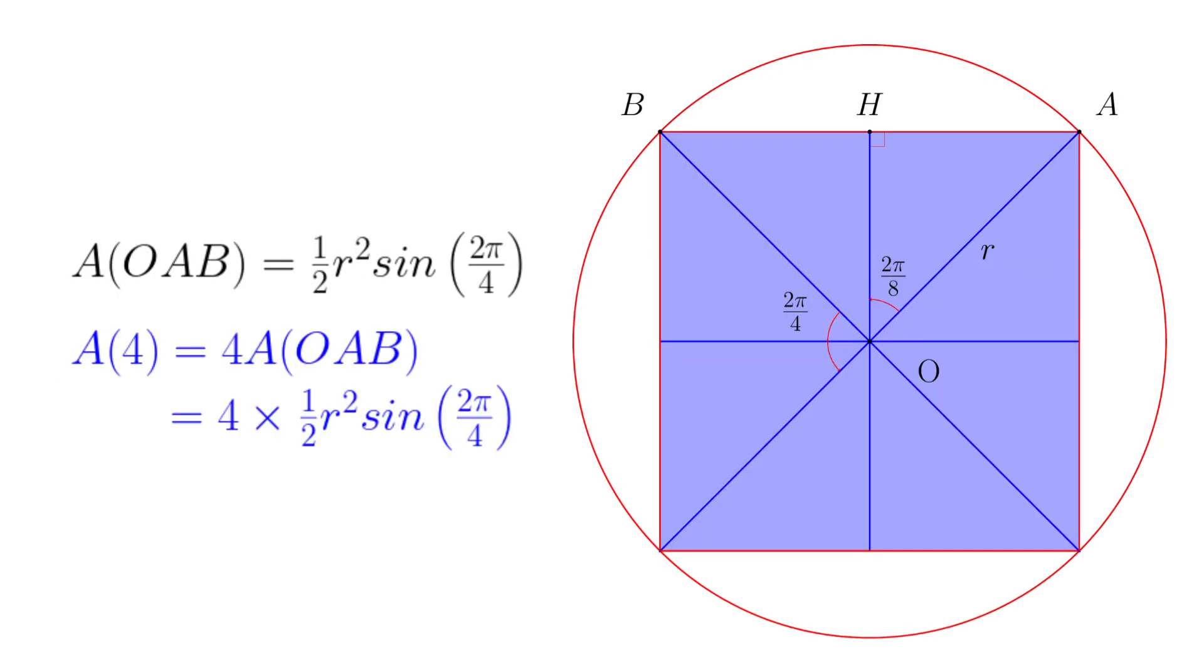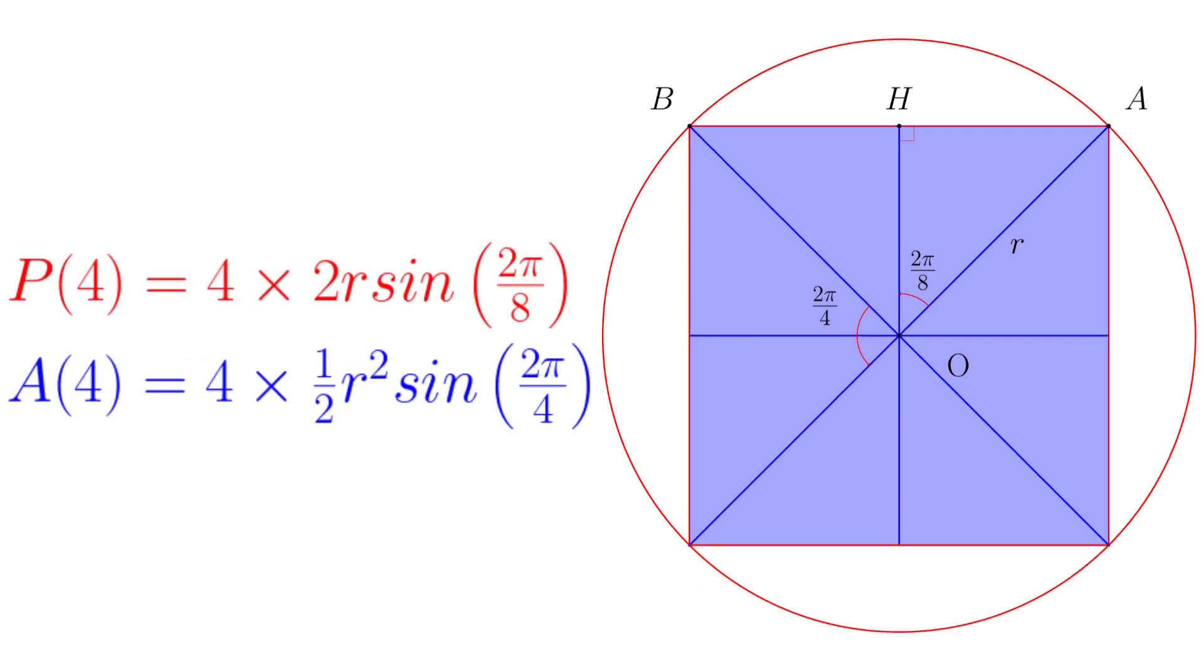Also, the area of this square denoted by A(4) is the sum of the area of the triangles, each created by the center of the circle and an edge of the square. The area of such a triangle is half of the square of the radius times sin(2π/4). The perimeter and area of a regular square inscribed in the given circle are summarized here.